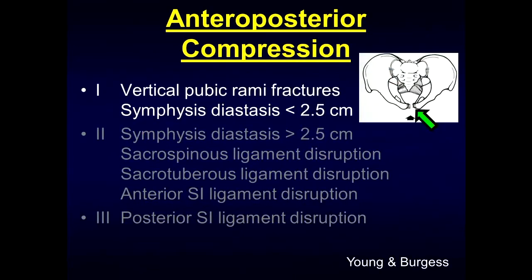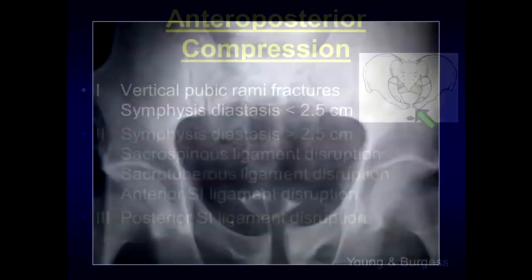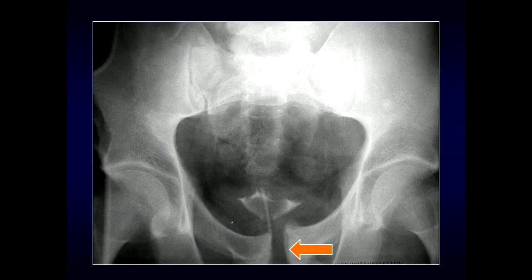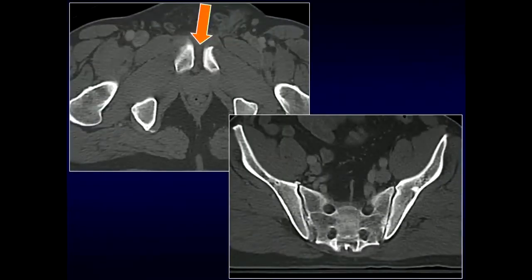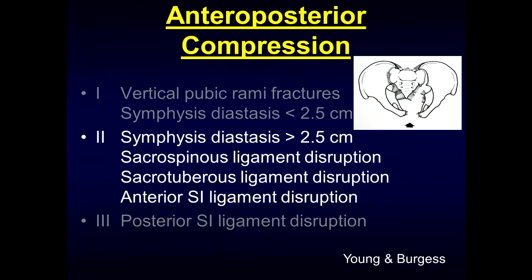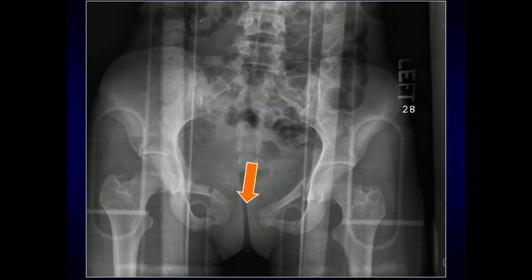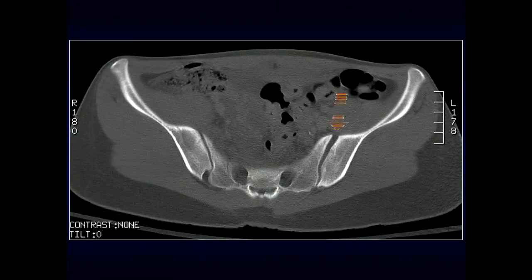In AP compression type 1, you can see the widening at the pubic symphysis on radiograph, and CT confirms that widening. In type 2, the symphysis pubis diastasis is greater than 2.5 centimeters, with injuries also to the sacrospinous ligament, sacrotuberous ligament, and anterior SI joint ligament disruption. Here we can see bilateral pubic rami fractures and widening of the pubic symphysis, with CT showing widening of the anterior aspect of the sacroiliac joint.